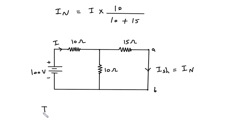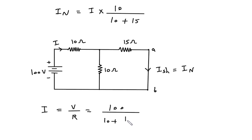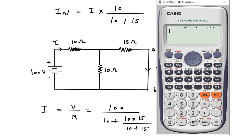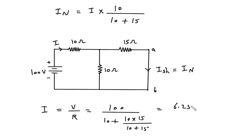To find total current I, it is equal to V by R. V here is 100 and R is 10 plus, now this 10 ohm is in parallel with this 15 ohm, so this will be 10 into 15 divided by 10 plus 15. This will be 100 divided by 10 plus 10 into 15 divided by 10 plus 15. So it is 6.25 Ampere, which is the value of total current I.